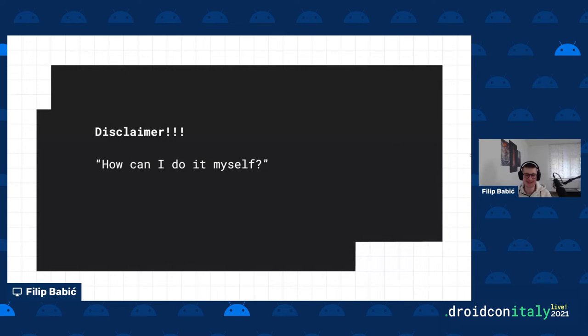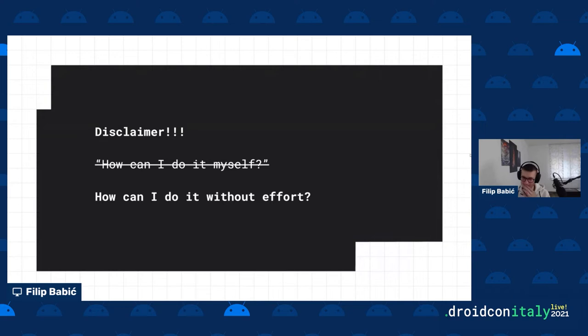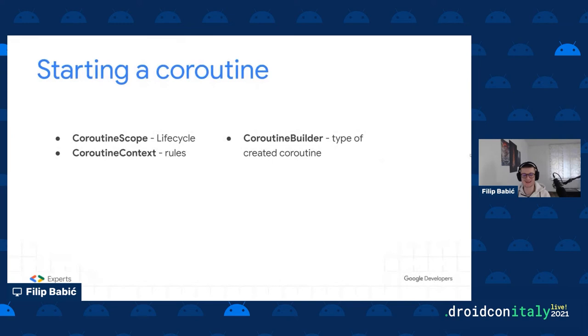A quick disclaimer: most of this presentation talks about how you can build things yourself, but I'll also present solutions using third-party libraries that require far less code. This is about building your own APIs and combining coroutines in your code without relying on standard third-party approaches — and then I'll show how much less code those libraries require while keeping the same functionality.